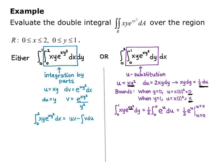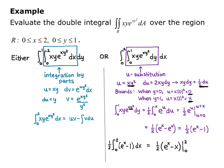Evaluating, we get (1/2)·e^u from u = 0 to u = x, which is (1/2)(e^x − 1). That's the inner integral result. Plugging into the outer integral: (1/2) times the integral from 0 to 2 of (e^x − 1) dx = (1/2)[e^x − x] from 0 to 2 = (1/2)(e² − 2) − (1/2)(1 − 0) = (1/2)e² − 3/2. That's the total double integral.